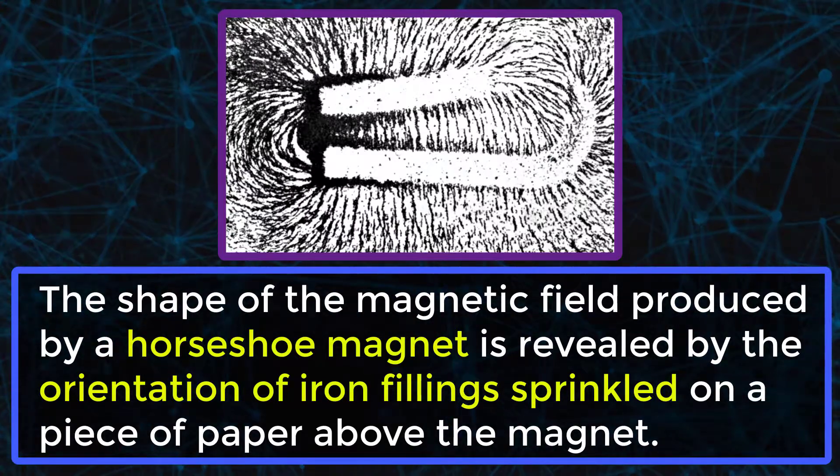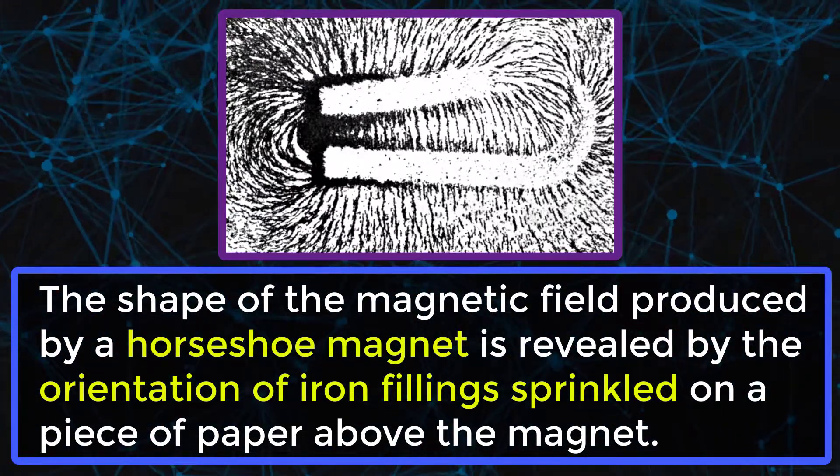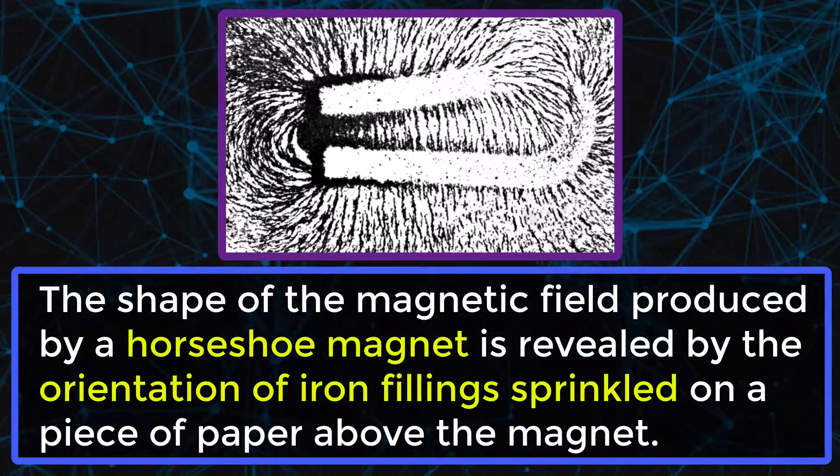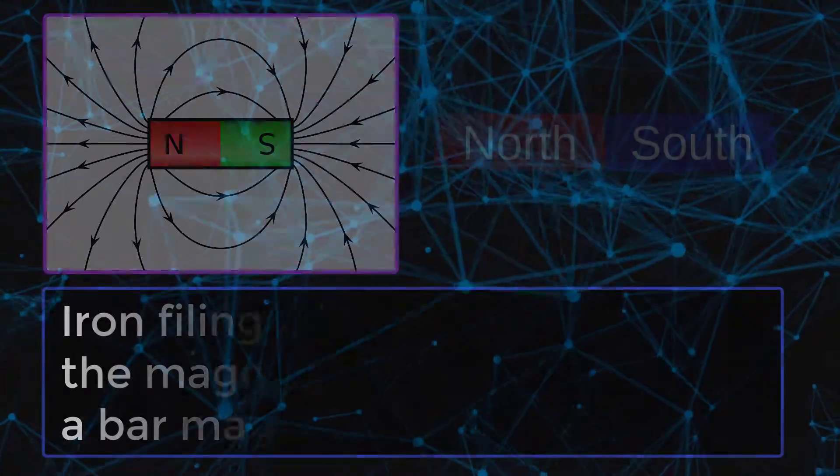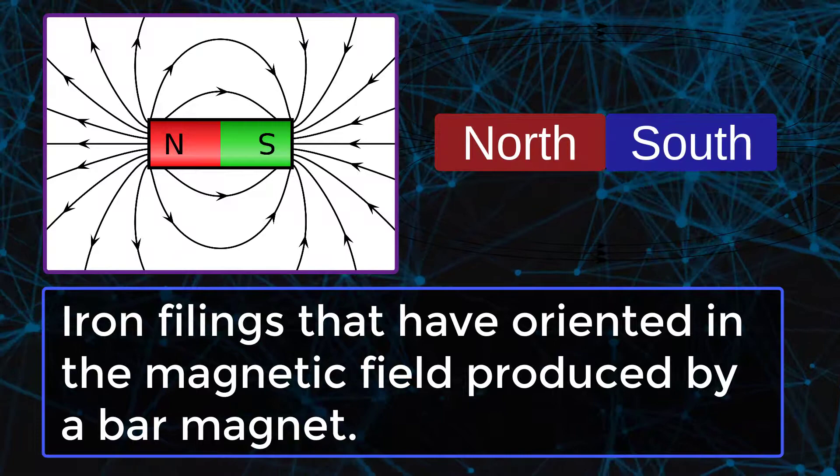The shape of the magnetic field produced by a horseshoe magnet is revealed by the orientation of iron filings sprinkled on a piece of paper above the magnet. Iron filings that have oriented in the magnetic field produced by a bar magnet.